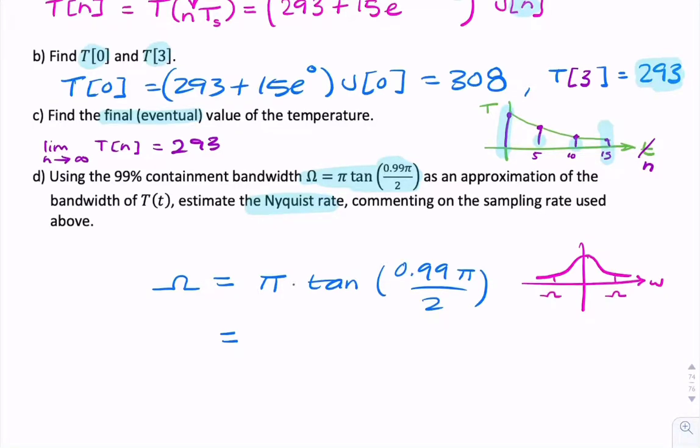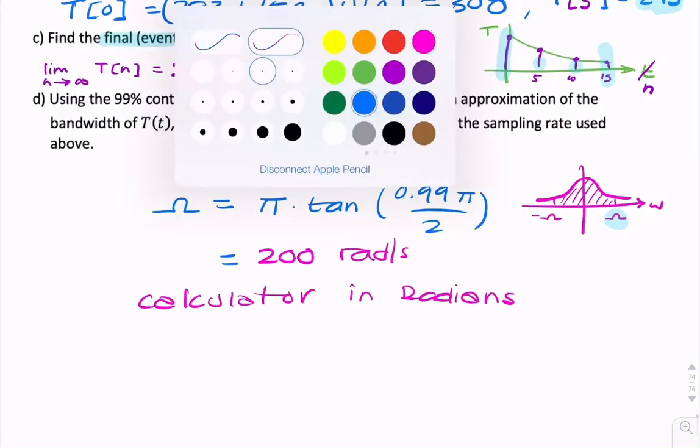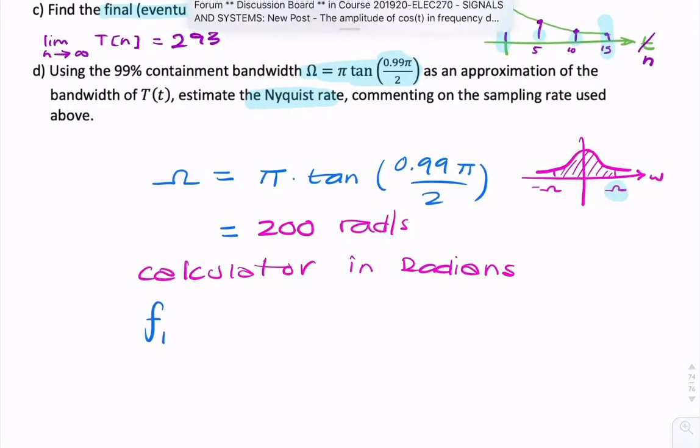This is the 99% containment value, or the effective bandwidth. So we can calculate that. So just put in pi times tan. Well, you just put that in the calculator, basically. Make sure your calculator is in radians. Okay, that's very important. Otherwise, you won't get the right tangent. Okay, so that will give you something very close to 200 radians per second. Okay, so that's useful. That's that value there. And from that, you can calculate the bandwidth.